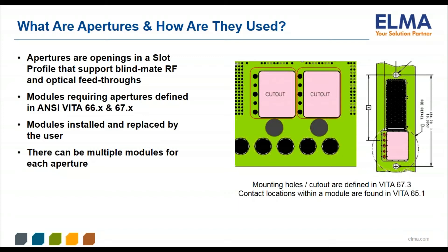Apertures are openings in VPX backplane slots that enable the use of blind mate RF and optical connectors. The modules requiring apertures are defined in the Vita 66 and 67 standards, and the type of aperture is defined within the individual Vita 65.0 slot profiles. The importance of these backplane connector modules is that they can be installed and replaced by the end user, and the Vita 67.3 backplane apertures can support modules with different arrangements of RF and optical connectors for each aperture size.